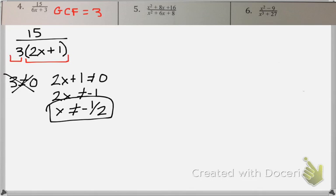Now when I go to simplify it, I see a 15 on the top and a 3 on the bottom. You simplify it just like any other fraction. If we divide them both by 3, that becomes a 1 and that becomes a 5. So my most simplified answer is 5 over 2x plus 1.